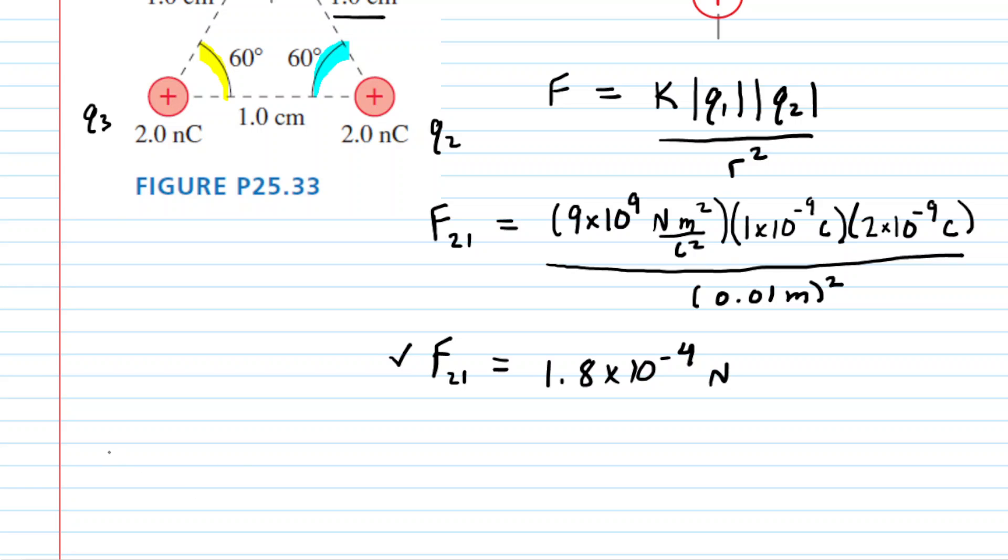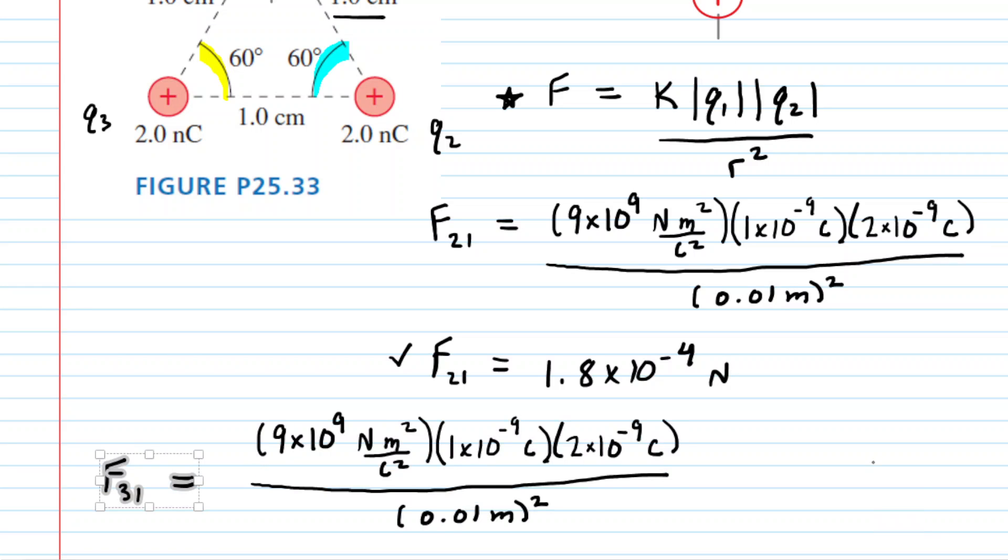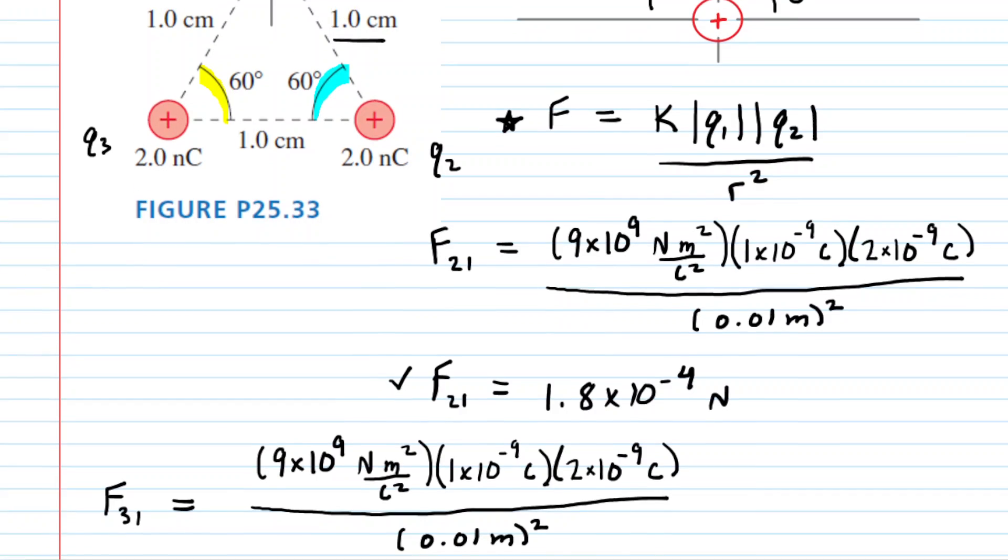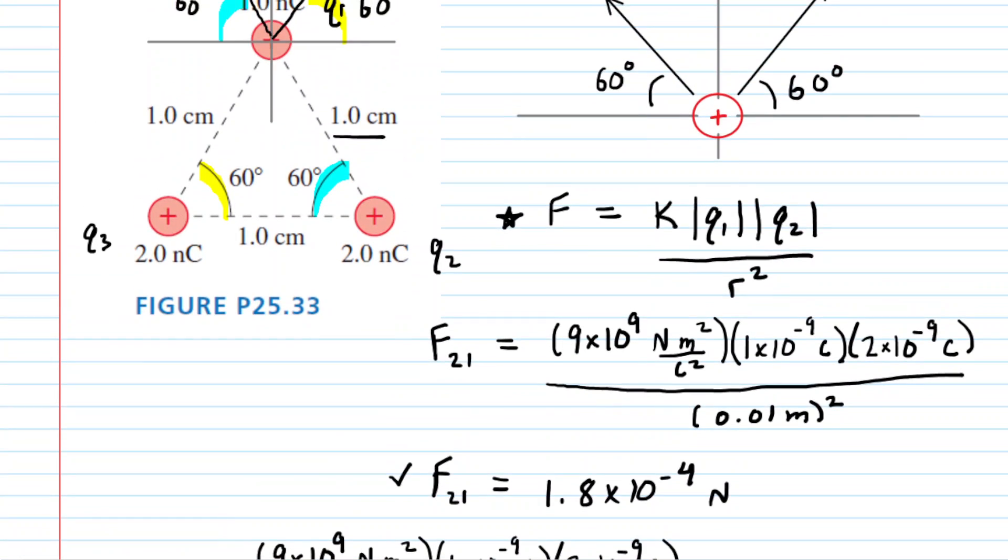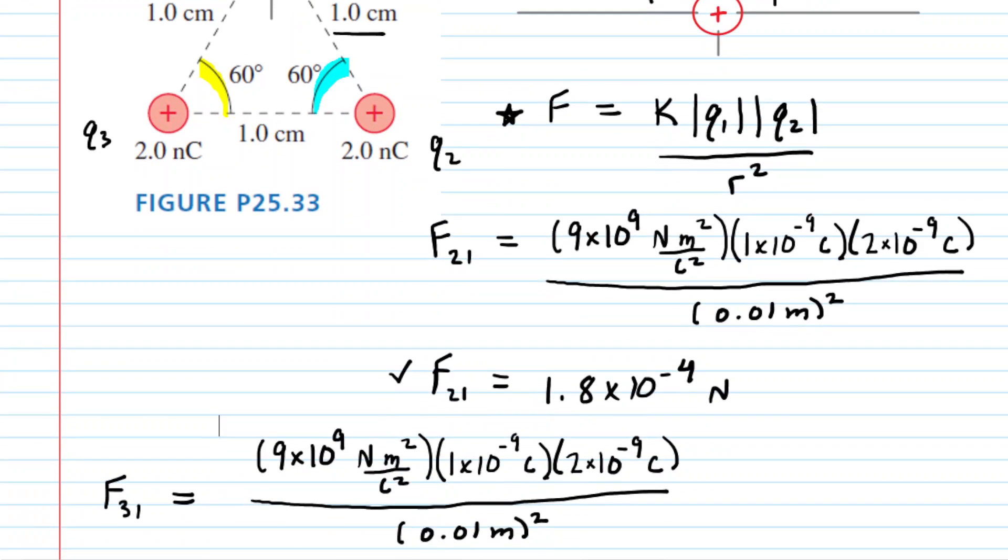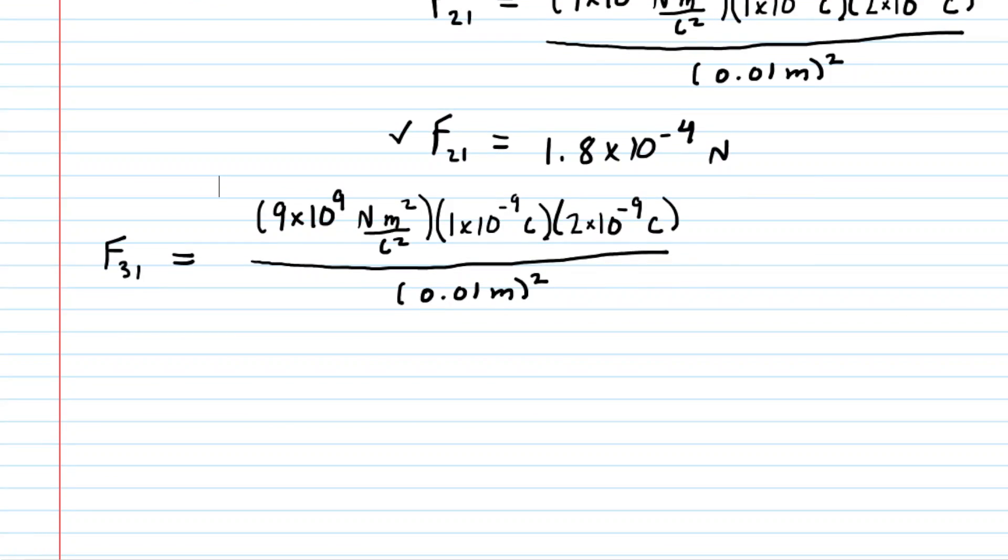We have to set up a similar calculation for the force that charge three is exerting on charge one. Again, we're going to be plugging into Coulomb's law here. We'll notice that the data are actually identical because Q3 also has a charge of two nanocoulombs, and the distance between Q3 and Q1 was also one centimeter. So we can compute this force and we'll get the exact same magnitude that we got earlier, 1.8 times 10 to the minus four newtons.